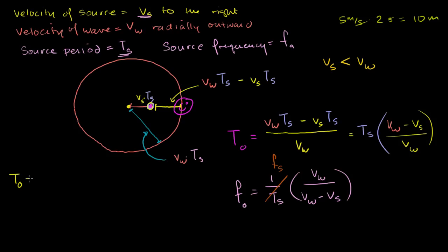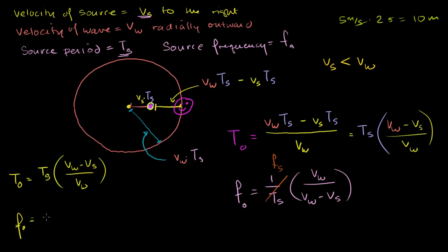To summarize our two formulas for an observer in the path of the moving source: the observed period equals the source period times (v sub w minus v sub s) divided by v sub w; and the observed frequency equals the source frequency times v sub w divided by (v sub w minus v sub s). In the next video, I'll do the same exercise but consider the observer sitting on the other side.